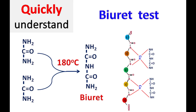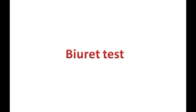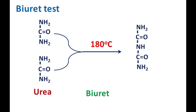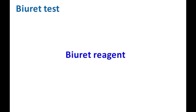Let's talk about the biuret test. The biuret test is used to detect peptides or proteins in a given sample. Biuret is obtained by heating two moles of urea at 180 degrees Celsius.